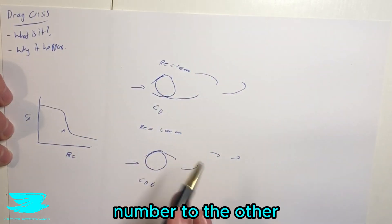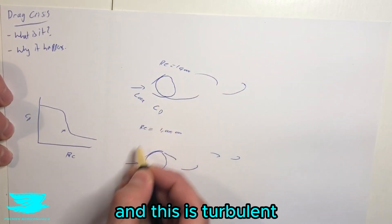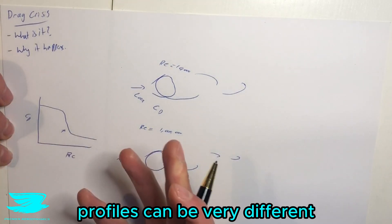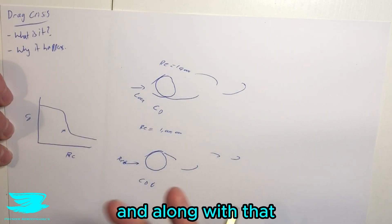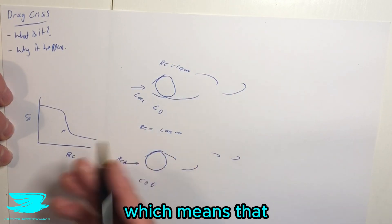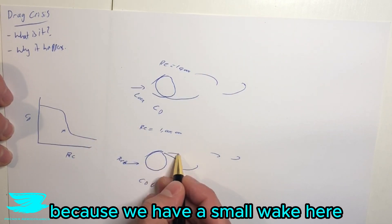as we go from one Reynolds number to the other, this is laminar and this is turbulent. So the boundary layer profile is going to be very different. And along with that comes the additional energy to stay attached, which means that the pressure drag will drop because we have a smaller wake here.